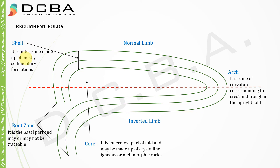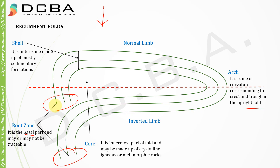The different parts of a recumbent fold: the shell is the outer zone made up of mostly sedimentary formation — this is what would be visible to you. The normal limb is visible, and the inverted limb is below it. The arch is the zone of curvature corresponding to the crest and trough in an upright fold. The root zone is the basal part that may or may not be traceable — it could be deep inside the soil or connected with other folds. The core is the inner part inside the fold.